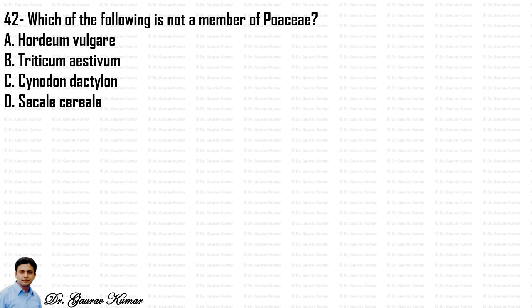Next question: which of the following is not a member of Poaceae? This question was actually wrong, because Hordeum vulgare, Triticum aestivum, Cynodon dactylon, and Cical cereal are all members of the Poaceae family — all four options are actually members of Poaceae.